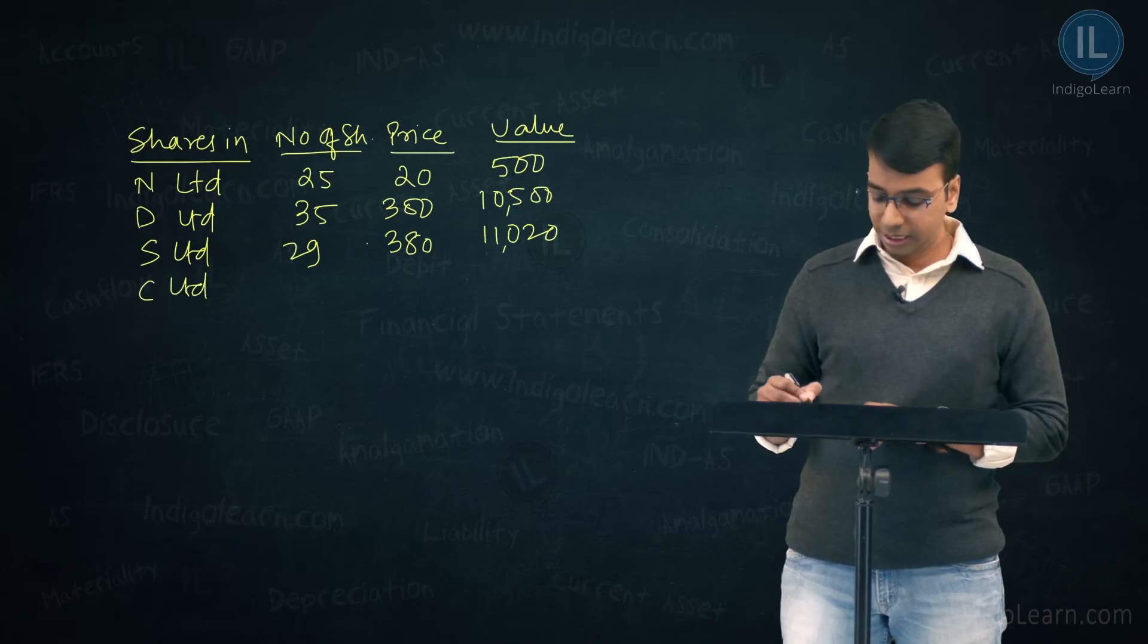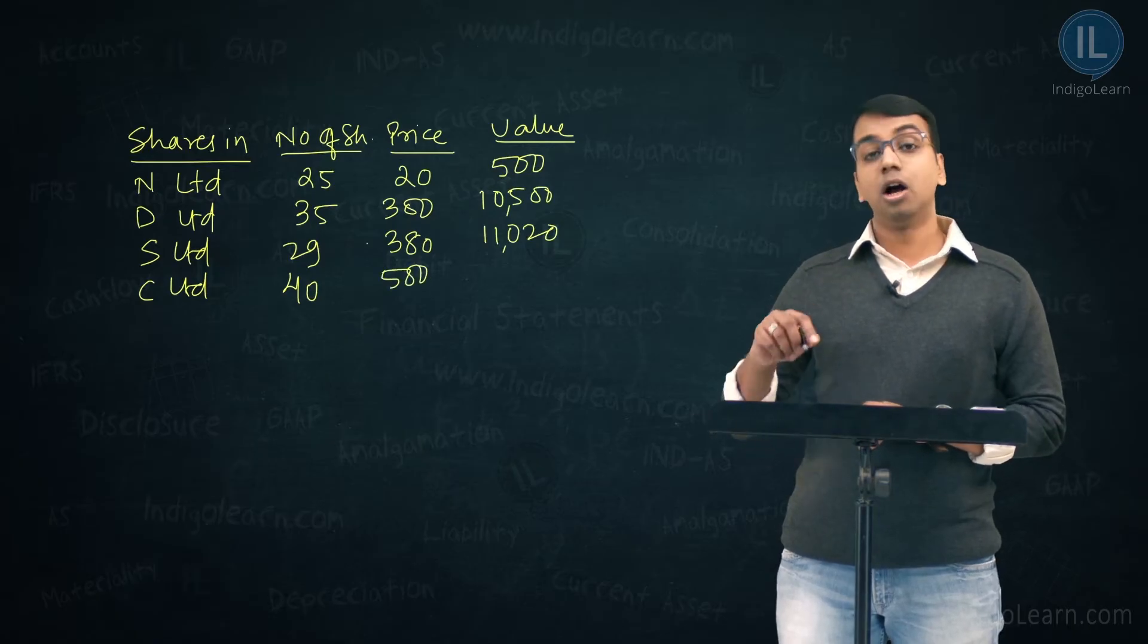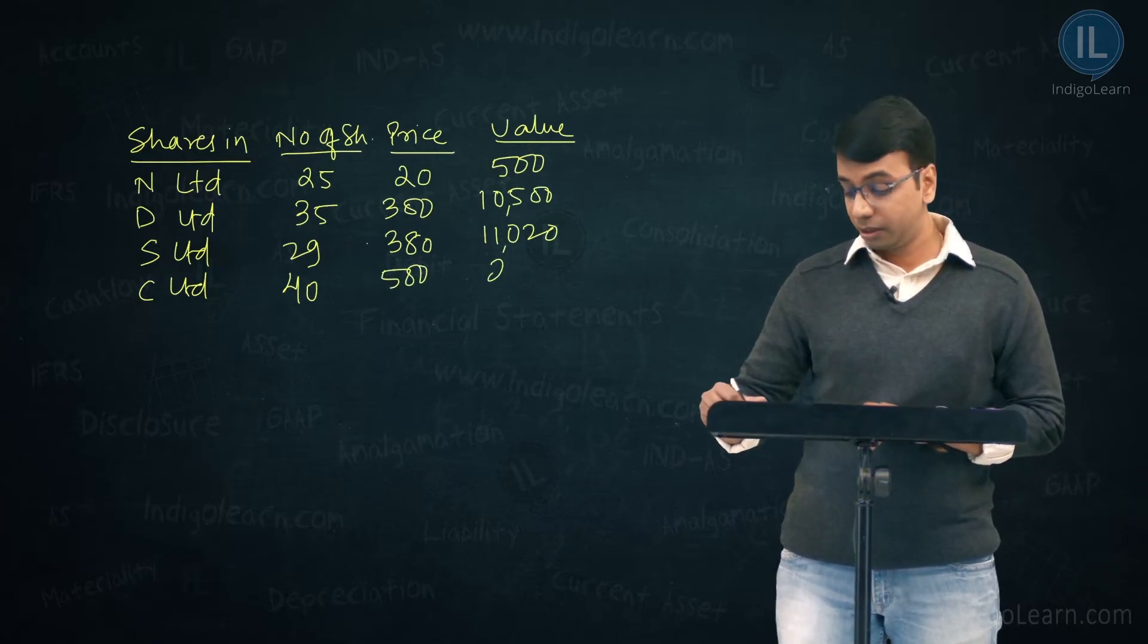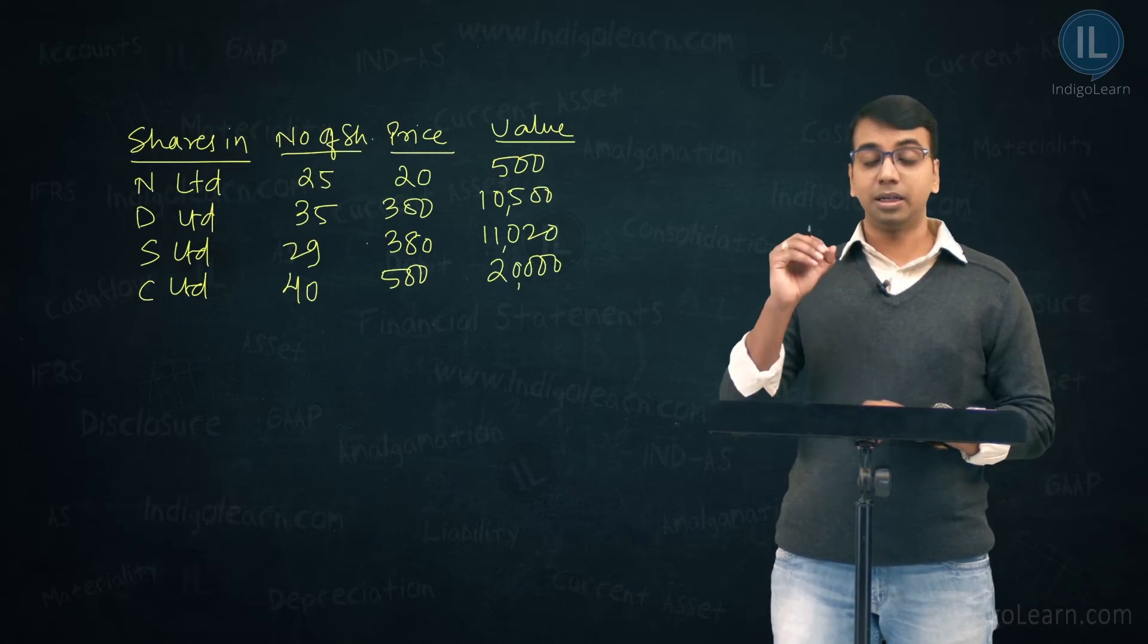Fourth company is C limited, number of shares are 40, market price per share are ₹500, 40 into 500, ₹20,000. These are the shares or value of shares held by the mutual fund.